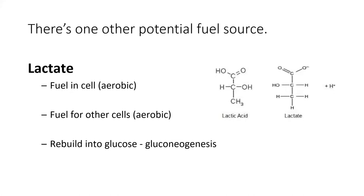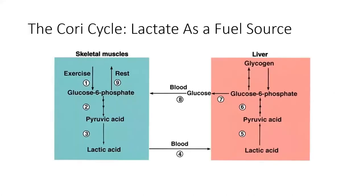Lactate can also be used to rebuild glucose through gluconeogenesis, where we take that lactate, buffer those hydrogen ions, put the pyruvates back together, and create more glucose. This can happen in the liver — lactic acid can be moved to the liver, resynthesized as glucose, or stored as glycogen, which is a bond of multiple glucose molecules.